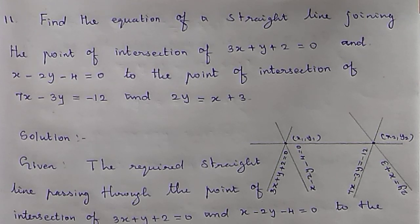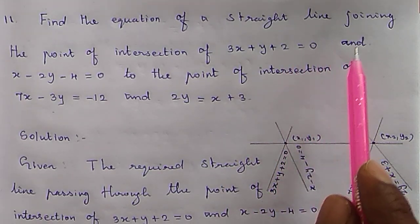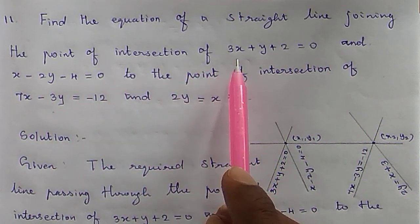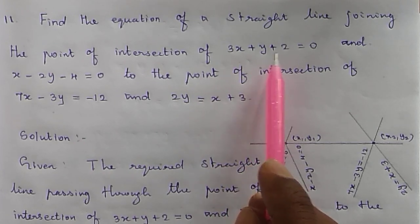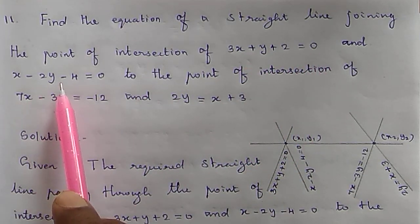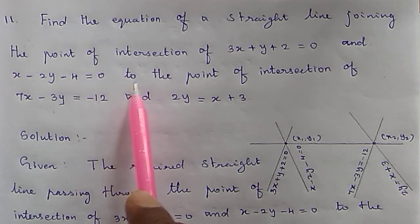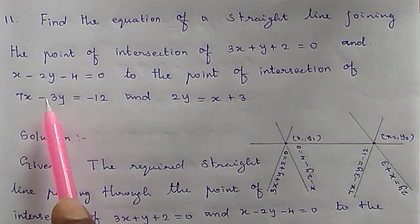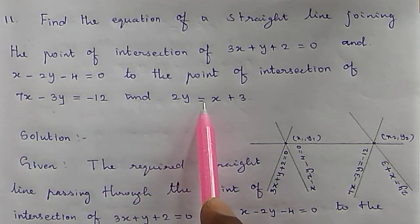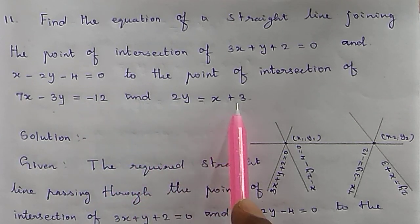Good morning students. This is lesson 5.4, problem 11. Find the equation of the straight line joining the point of intersection of 3x + y + 2 = 0 and x − 2y − 4 = 0, to the point of intersection of 7x − 2y = −12 and 2y = x + 3.